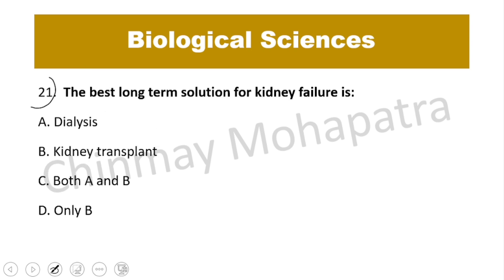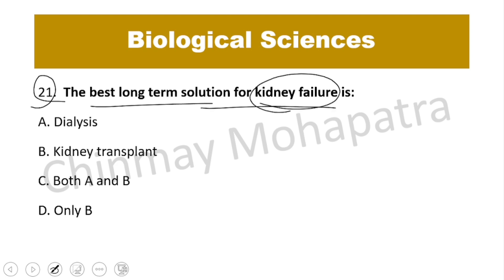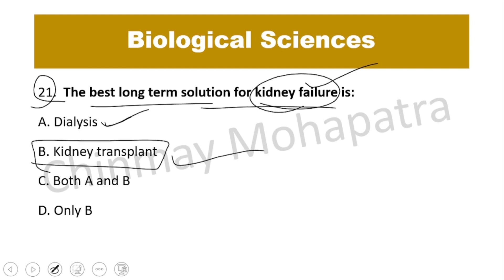Question number 21: What is the best long-term solution for kidney failure? Dialysis is a temporary solution, but kidney transplantation is the long-term solution. The right answer is B — kidney transplantation.